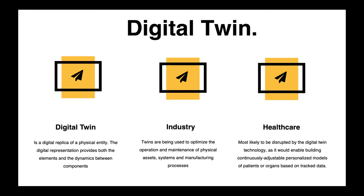This is a concept that has been used a lot in industry because digital twins are used to optimize operation and maintenance of physical assets. For instance, one can think of an MRI machine. They're very expensive and one wants to anticipate the potential of a part failure so a part can be ordered in advance and replaced before the machine needs to be shut down while waiting for the new part.